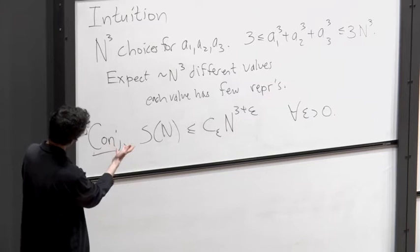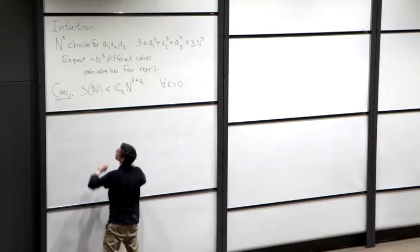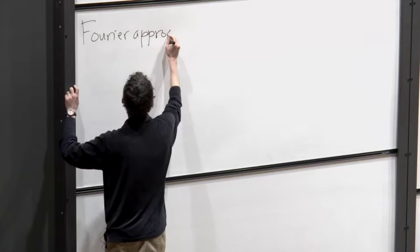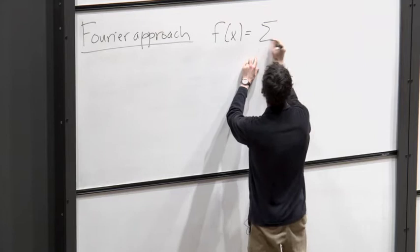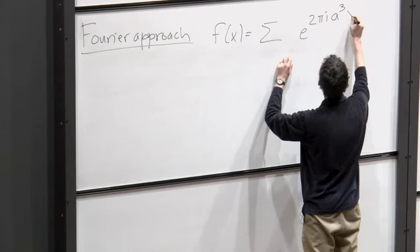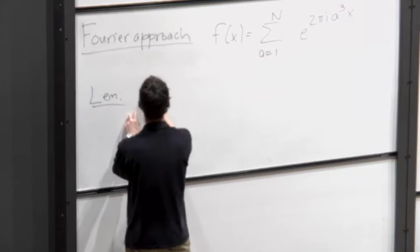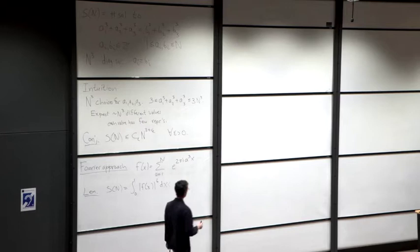There's an approach to this type of problem using Fourier analysis. The starting point is to define a trigonometric polynomial tailored to this problem: f(x) = Σ_{a=1}^{n} e^(2πi a³ x). The claim — the lemma — is that the number of solutions to this equation is equal to the integral from 0 to 1 of |f|⁶. There's a cute little trick to verify this, which goes as follows.